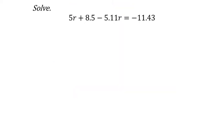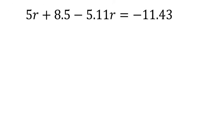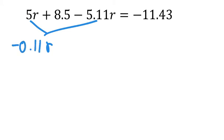On this one, I don't see any distribution needed like we did on that last problem. But I do see some combining like terms with the r's. 5r minus 5.11r — how many r's is that? Type 5 minus 5.11 in the calculator: that's negative 0.11r. We didn't do anything with the plus 8.5, so it stays. This equals negative 11.43.